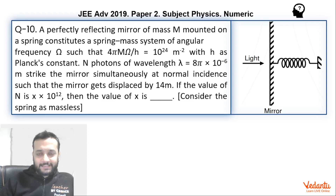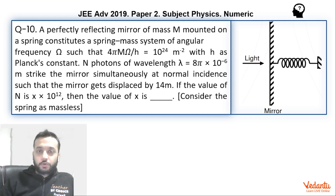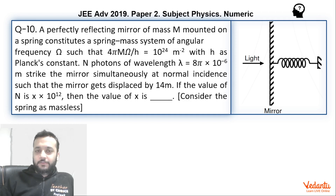Hello dear students. Let's see this question that came in JEE Advanced paper for physics in the year 2019. The question is from the topic of radiation pressure and most students could easily solve this question in the exam. The question was fairly simple and procedural, but in my opinion there was an assumption that we make without even realizing it while solving. So let's see how to solve this question and what assumption I am talking about.